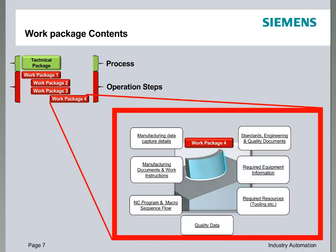The contents of the work package are really everything that you need in order to execute that particular stage or step. It could be manufacturing data, details of measurements that need to be made, standard engineering documents or quality documents, equipment that's required, resources like cutting tools, and quality information. Everything that needs to be stored against that step to make it easy for the person executing it to see the information — that is what we deem the contents of the work package.